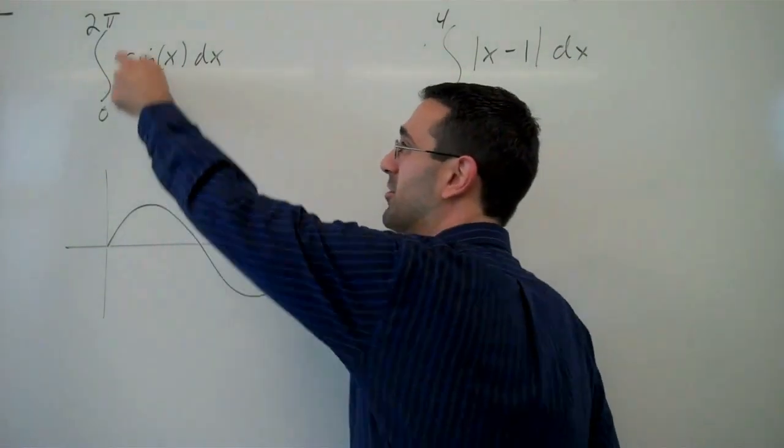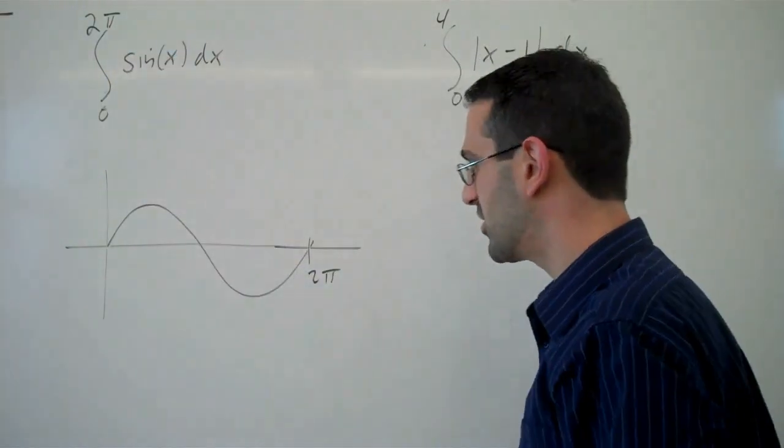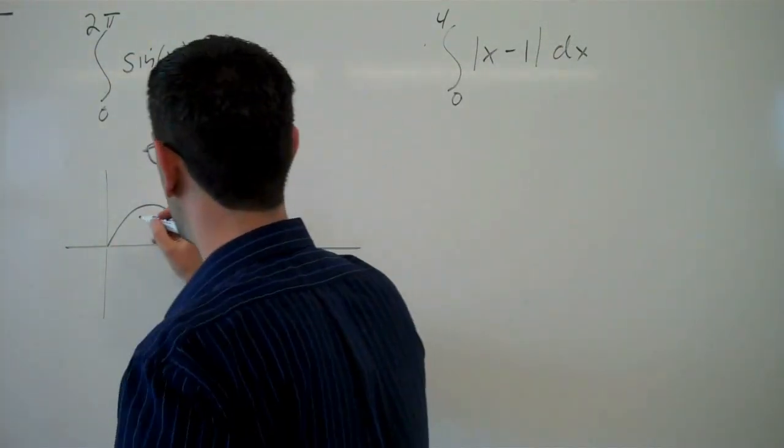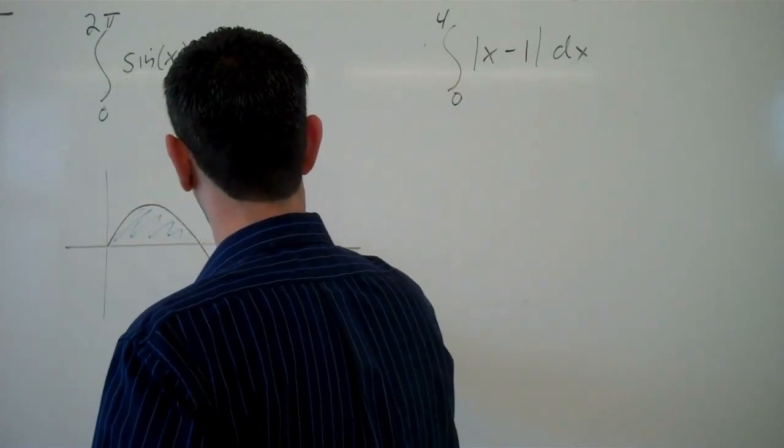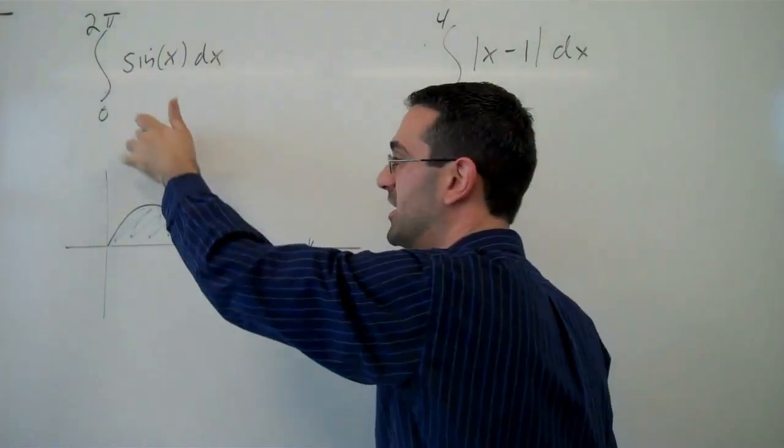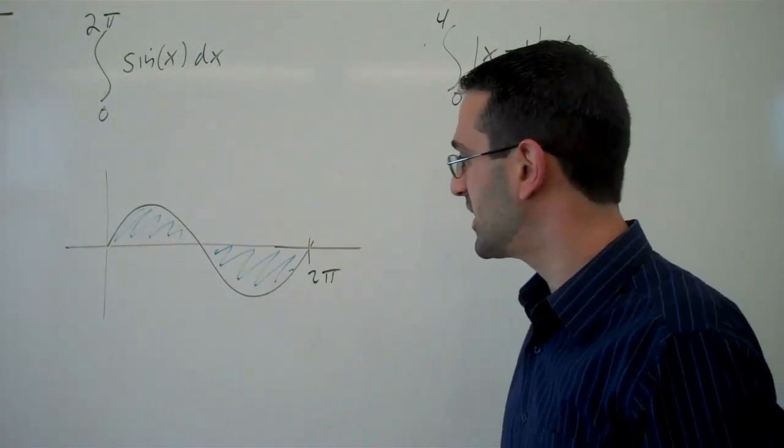So if we're going to find the integral from 0 to 2 pi under this curve, we're finding this here. This definite integral corresponds with these quantities.